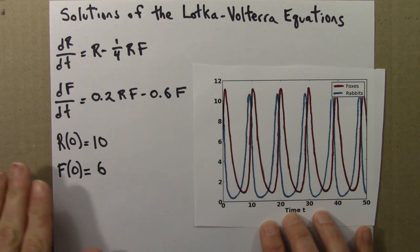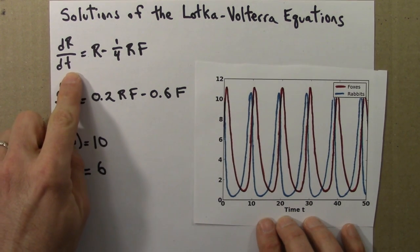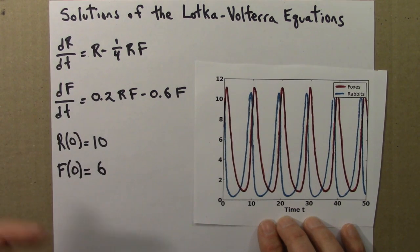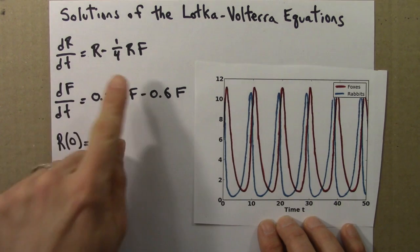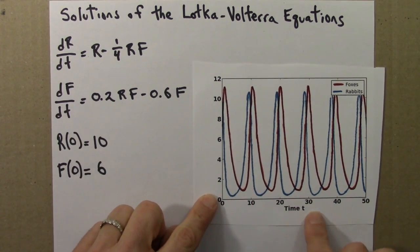So if it was a one-dimensional situation and we just had rabbits growing, logistically perhaps, we would just have a one-dimensional phase line because there's one thing to keep track of, rabbits. Now there are two, and so we'll plot this on a phase plane.